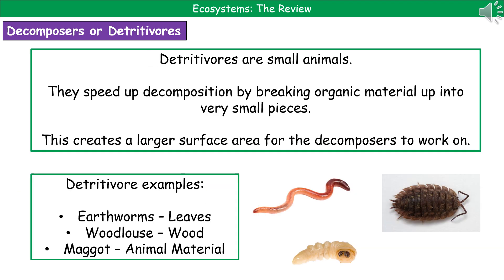The second important type of organism is the detritivore. Be careful not to mix up decomposers and detritivores. Detritivores are small animals whose purpose is to speed up decomposition by breaking organic material up into very small pieces. This creates a much larger surface area for the decomposers — the bacteria and fungi — to work on, resulting in a faster rate of decay.